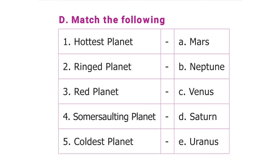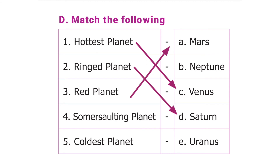The next section is match the following. Hottest Planet - Venus. Ringed Planet - Saturn. Red Planet - Mars. Tilted Planet - Uranus. Coldest Planet - Neptune.